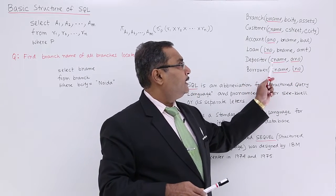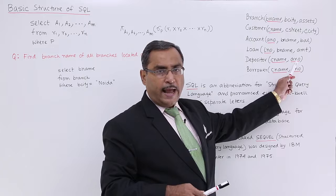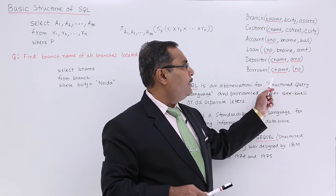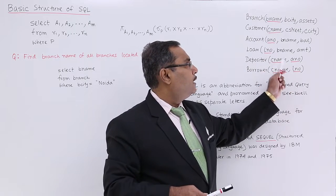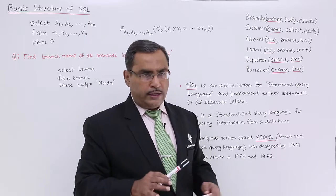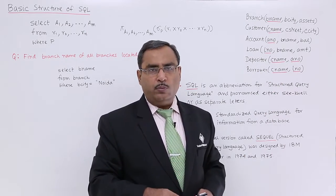Depositor is having the customer_name and along with that account_number, and Borrower is having the customer_name along with the loan_number. Here we have written the six schemas on which we will be working.